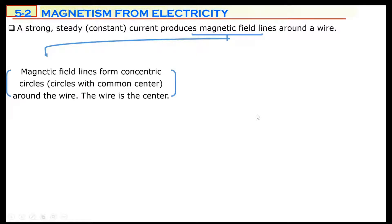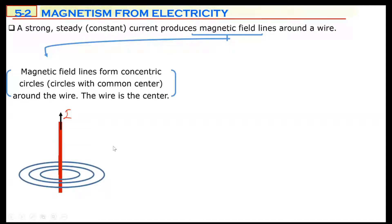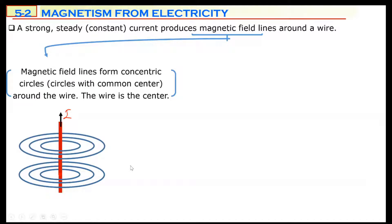Magnetic field lines form concentric circles. Concentric means they have a common center. The wire is the center of this circular pattern. The electric current direction is up, and around this wire there are circular magnetic fields. Each circle has the same center — the wire itself. That's why it's called concentric circles. You can draw thousands or millions of circles around this wire. The plane of the magnetic field is always perpendicular to the wire. If the electric current is vertical, the plane of the magnetic field will be horizontal.